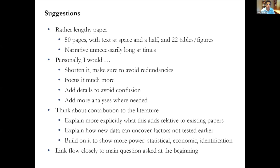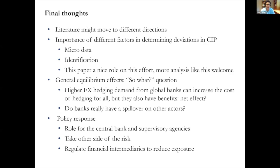In terms of where I see the literature going: I reviewed what CIP is and where the literature stands and might go forward. One direction is the importance of different factors determining CIP deviations using micro data and identification. This paper plays a role in that effort — trying to get good data and identification to determine what is driving deviations from CIP.